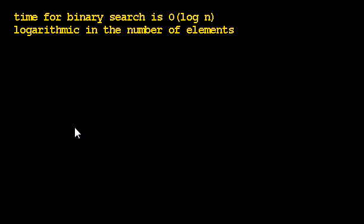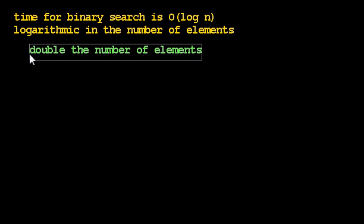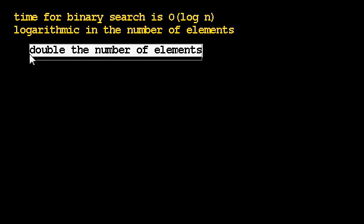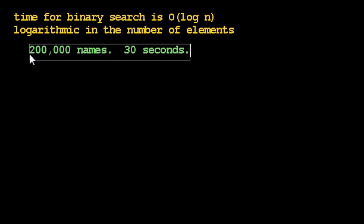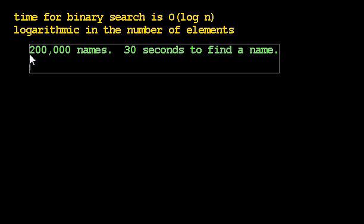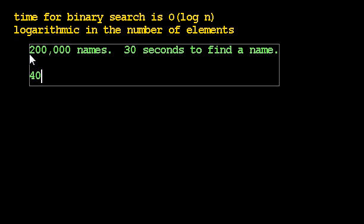And here's an insight that might tell you that that has to be true. Whenever I double the number of elements, if I have twice as many elements. So, actually, let's use some numbers. Suppose I have 200,000 names, and it takes me 30 seconds to find a name in the phone book. And that phone book is in sorted order, or I shouldn't be using binary search. Now, if I have 400,000 names, I move to a much bigger city. I have 400,000 names in the phone book in that city. How long is it going to take me to find a name? I'll give you a hint. It's not 60 seconds.